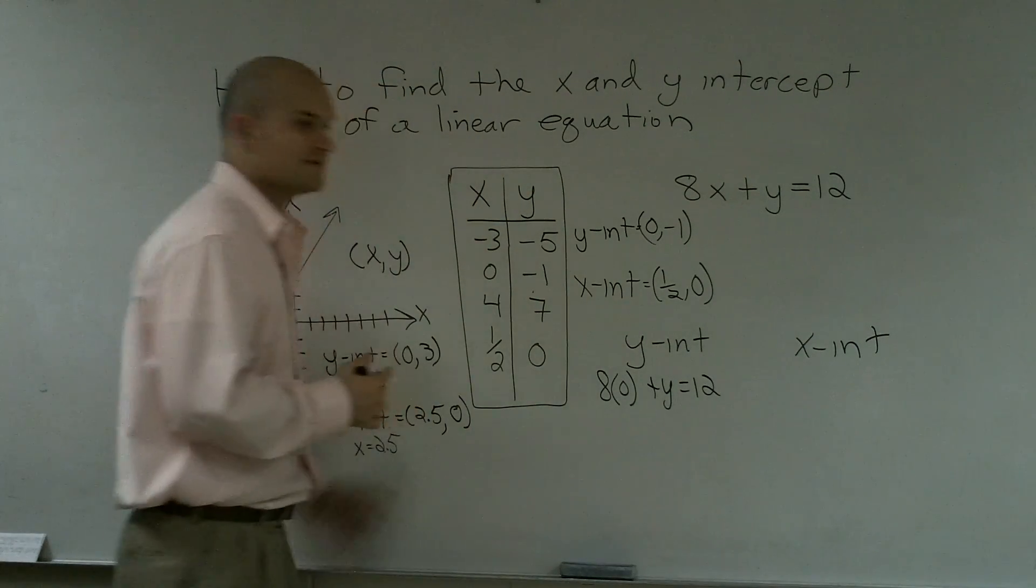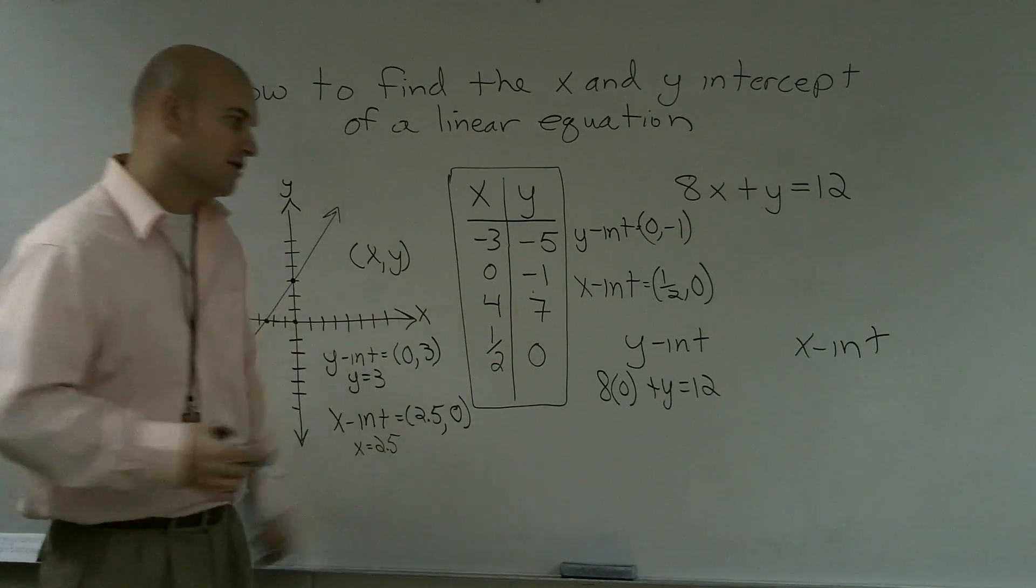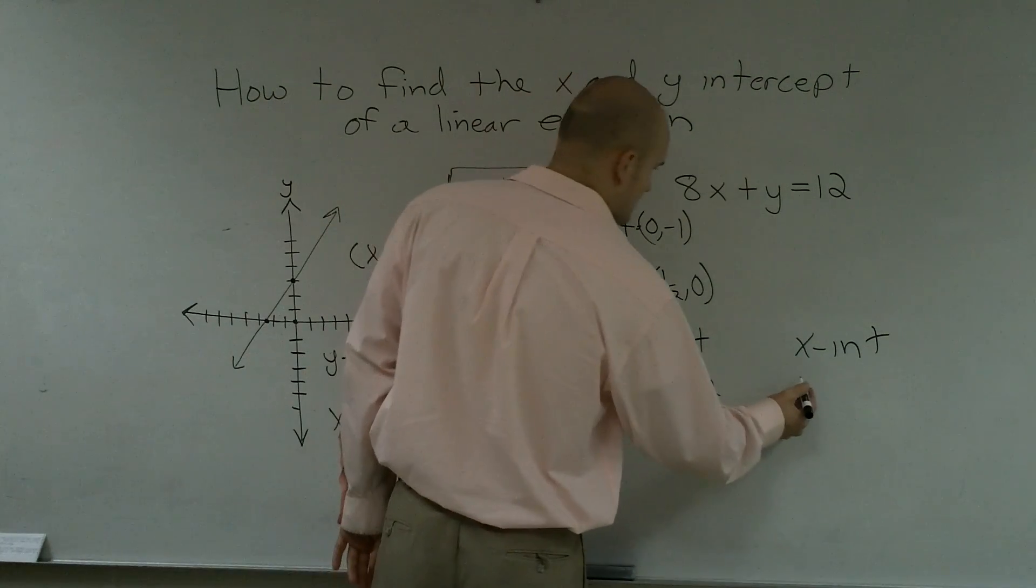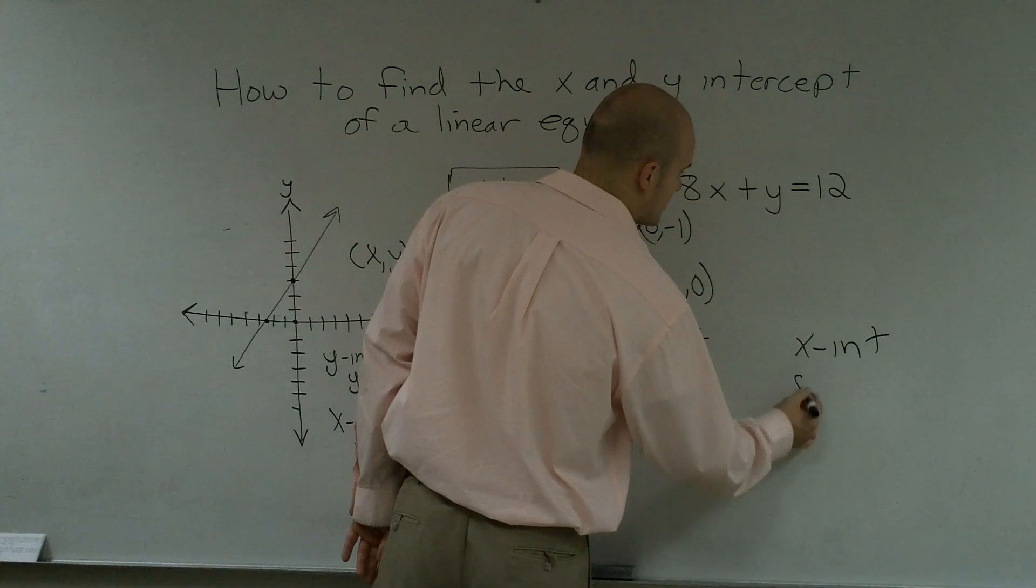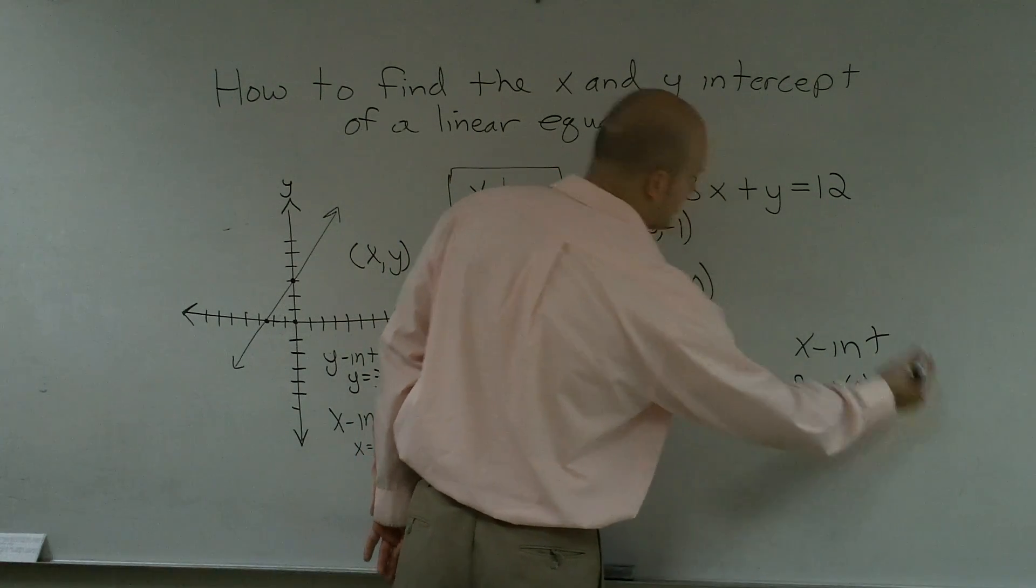And then for my x-intercept, I'm going to plug a 0 in for the y because I know that my y-value is 0 at the x-intercept. So therefore, I'm going to do 8x plus 0 equals 12.